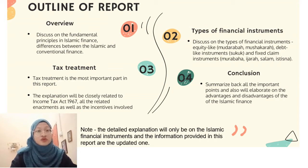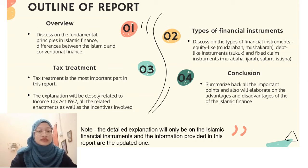The outline of the report starts with the overview, which discusses the fundamental principles in Islamic finance and the differences between Islamic and conventional finance. Next, we will discuss the types of Islamic financial instruments, including equity-like instruments, fixed claim instruments, and examples. Then we proceed to the most important part: tax treatment, which closely relates to the Income Tax Act and all related enactments as well as the incentives involved. Lastly, the conclusion will summarize key points and discuss the advantages and disadvantages of Islamic finance.